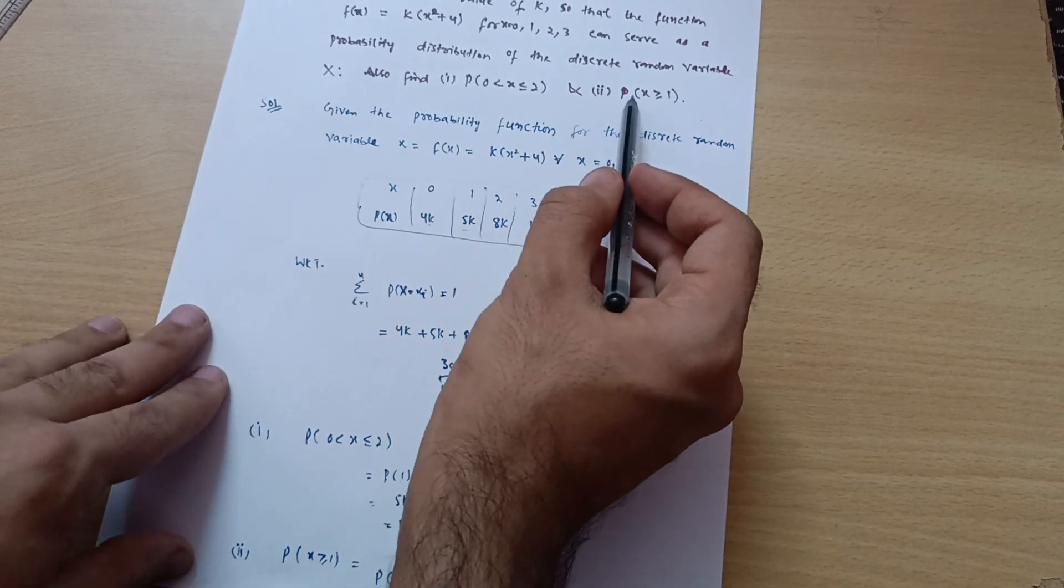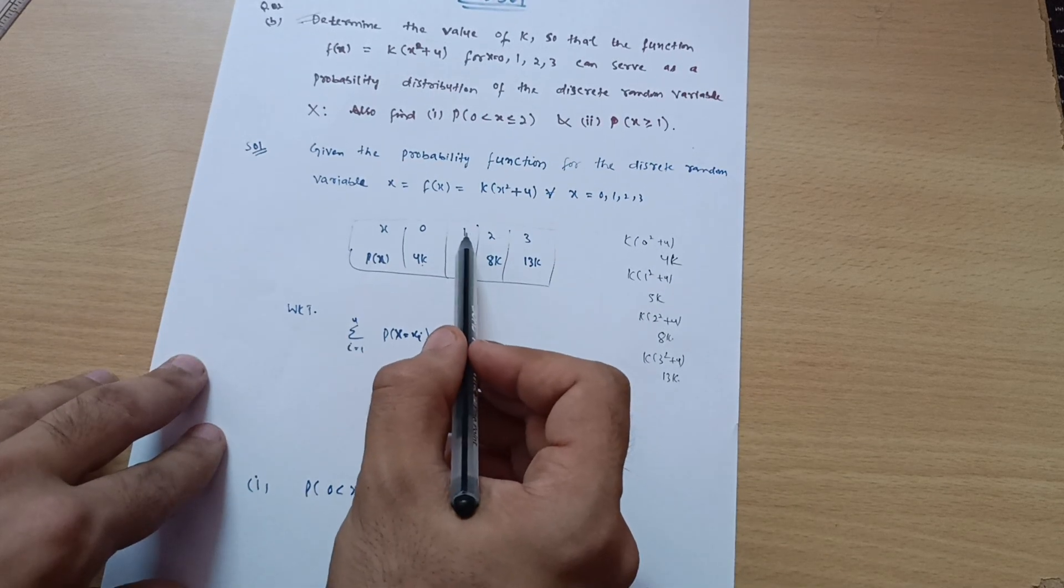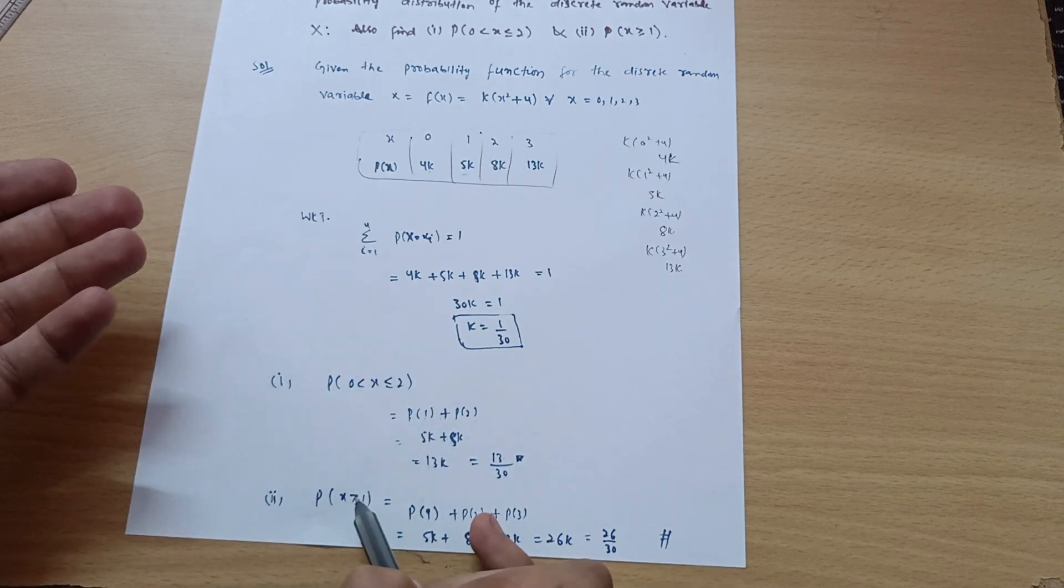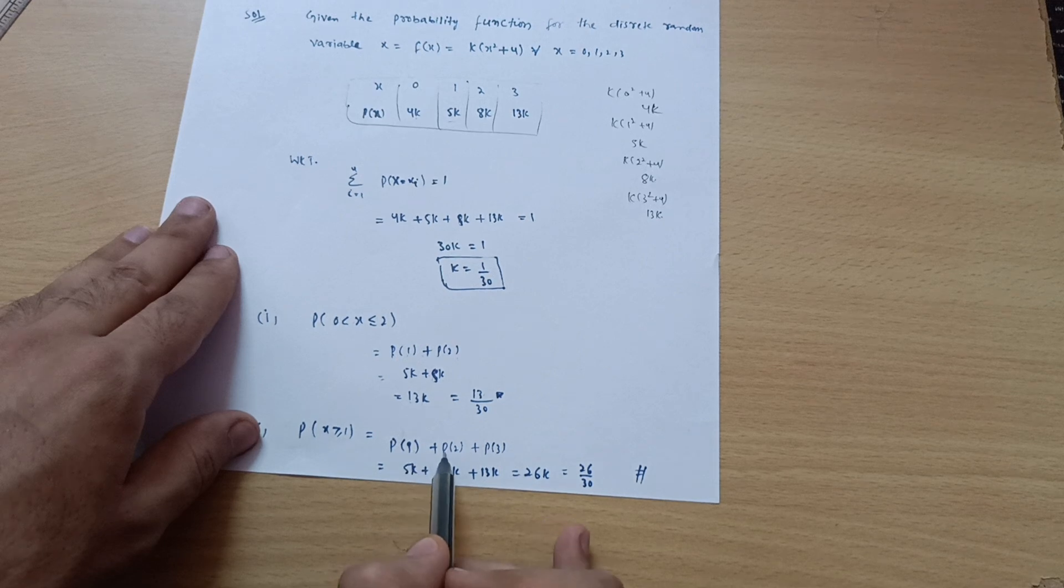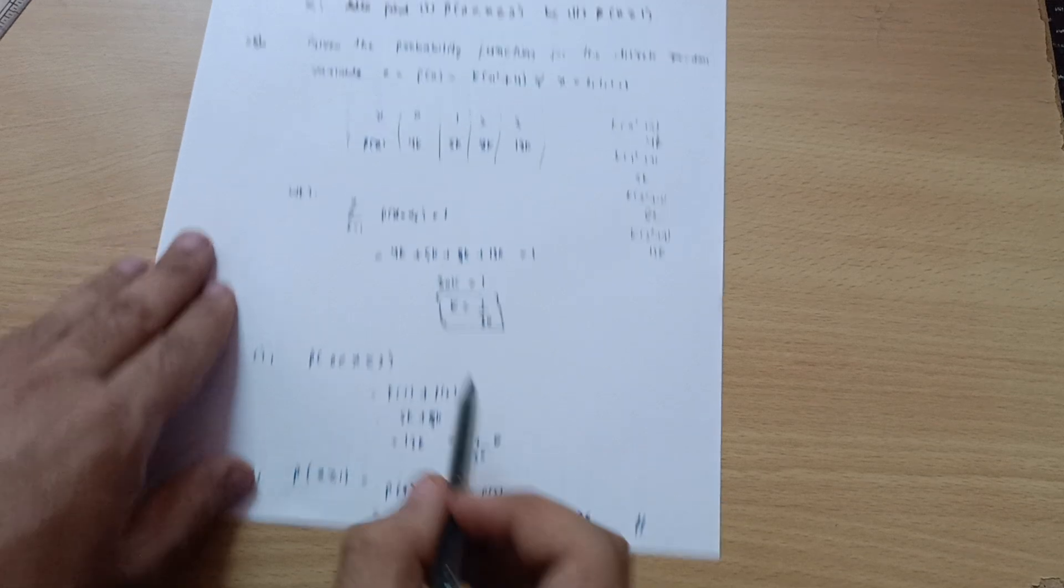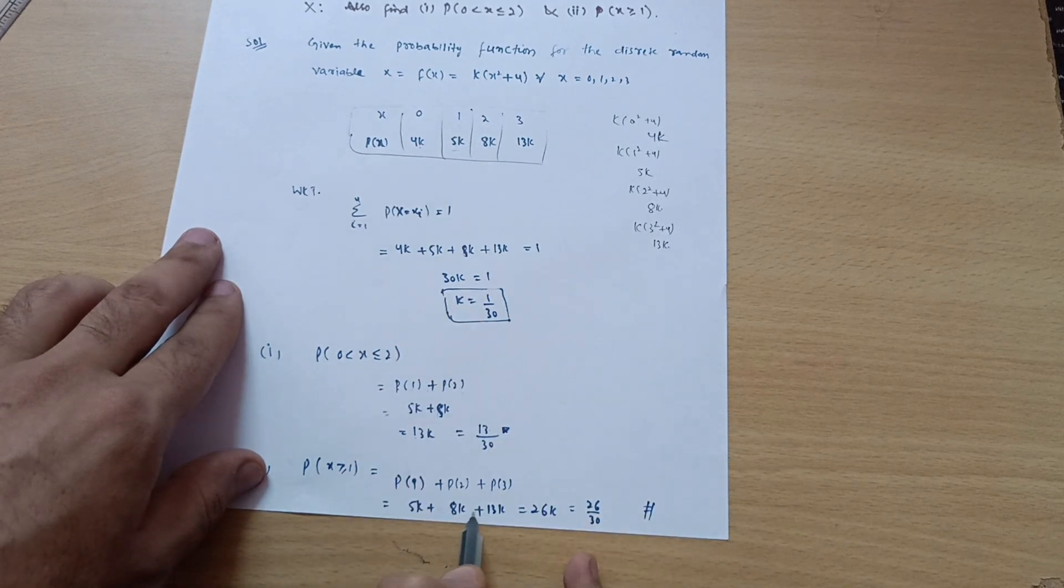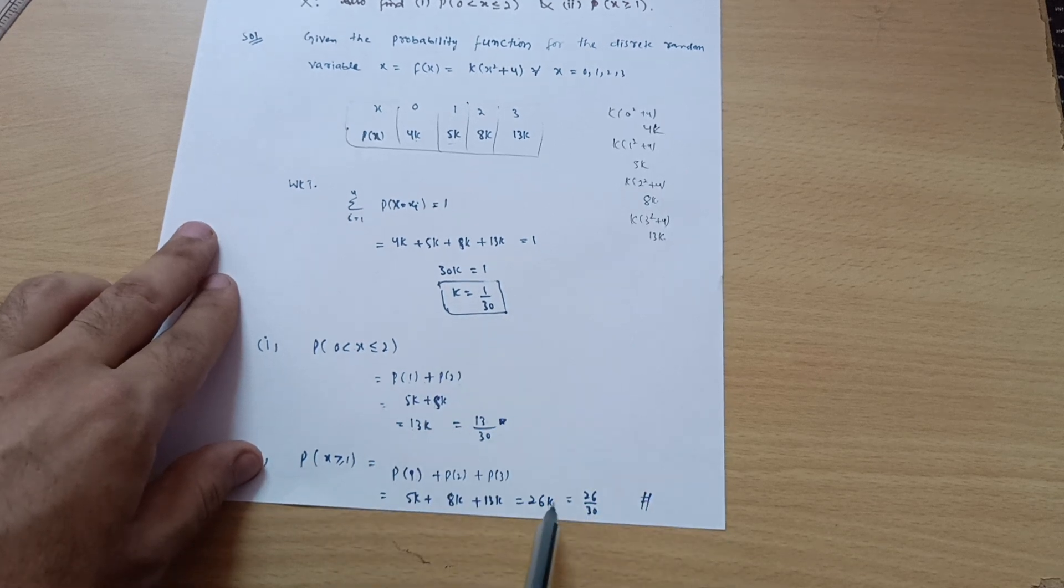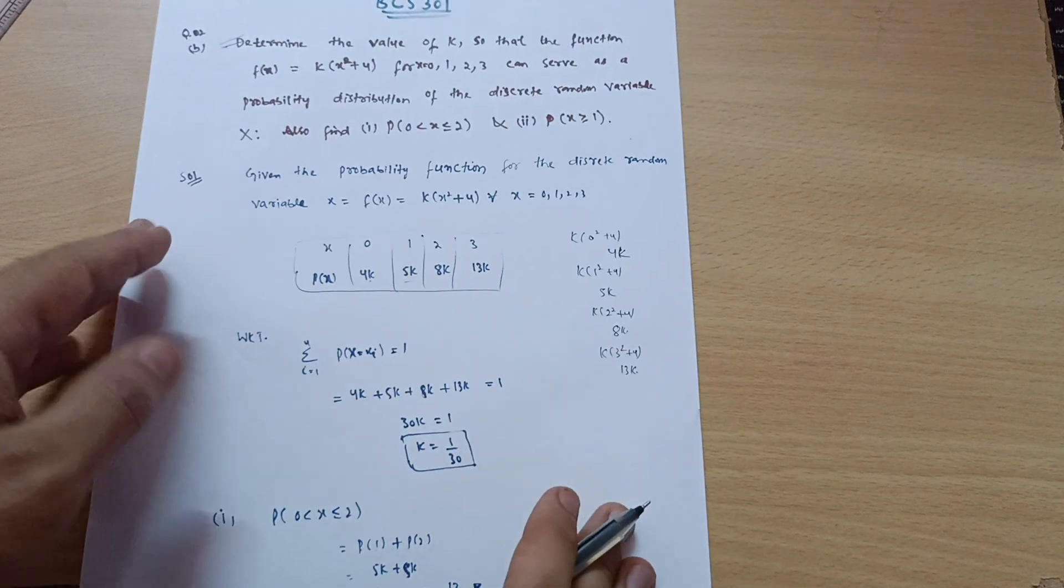Now second part: P(x ≥ 1). P(x ≥ 1) means 1, 2, 3—either equal to or greater than 1. So probability of 1 plus probability of 2 plus probability of 3. Probability of 1 is 5k, probability of 2 is 8k, probability of 3 is 13k, which equals 26k. K is already calculated as 1/30, so you will get 26/30. This is the answer for this particular question.